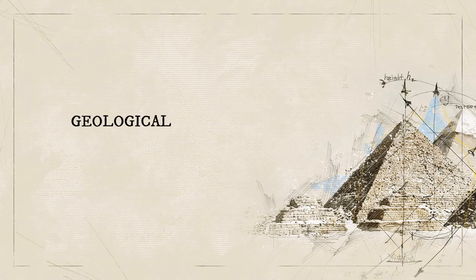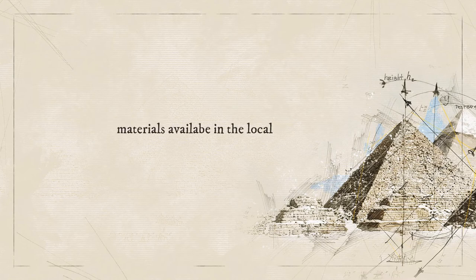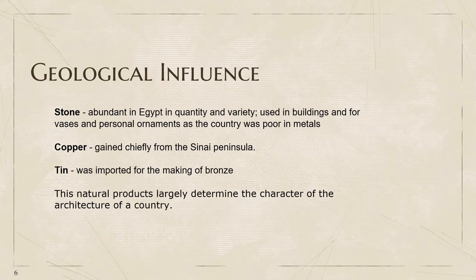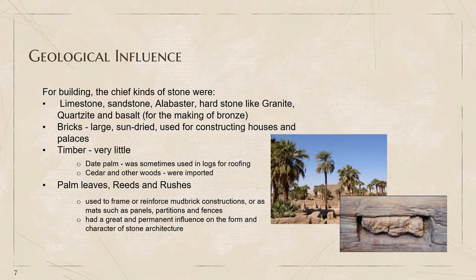Geological influence. In this part, we are going to talk about the materials and all such things available locally. Stone is abundant in Egypt in quantity and variety. These were used in buildings and for vases and personal ornaments, as the country was poor in metals. However, copper is gained chiefly from the Sinai Peninsula. Tin was imported for the making of bronze. For buildings, the chief kinds of stone were limestone, sandstone, and alabaster, and hard stones such as granite, quartzite, and basalt.